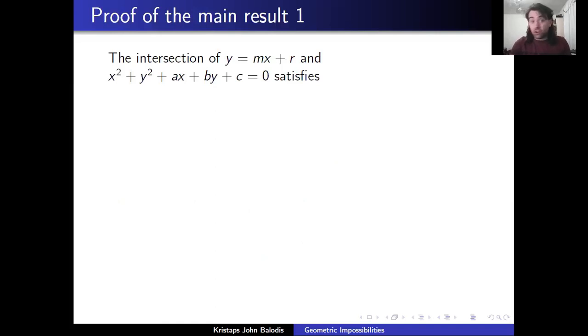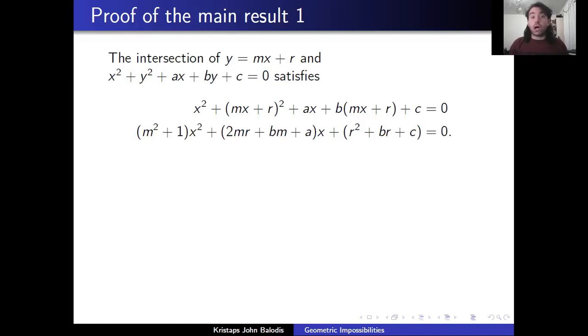So things get a little bit spicier if we think about the intersection of a line with a circle. The general equation of a line is y = mx + r. Of course, we have a special case for perfectly vertical lines, but that is a degenerate case. And then a general equation of a circle is going to be of the form x² + y² + ax + by + c = 0, where again, if this is a constructible circle and constructible line, all those coordinates are going to be in the base field. So we simply substitute y into this equation of the circle, and then we rearrange and we obtain this polynomial in terms of x that we see in the bottom line.